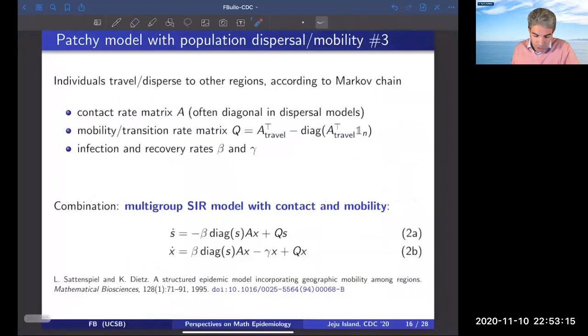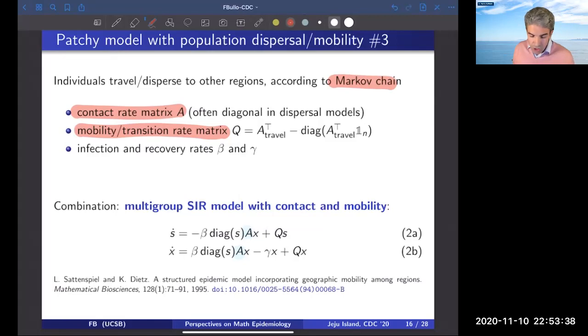There's a rich literature on models whereby not only do individuals interact through a contact rate matrix A, but they also disperse and travel. So this is model three. There's not only a contact rate matrix, but also there is a mobility transition rate matrix. So you model mobility as a continuous time Markov chain. The model that I have depicted for you in the previous slide is modified by taking into account this mobility. This is an early reference about mobility-based infection models.